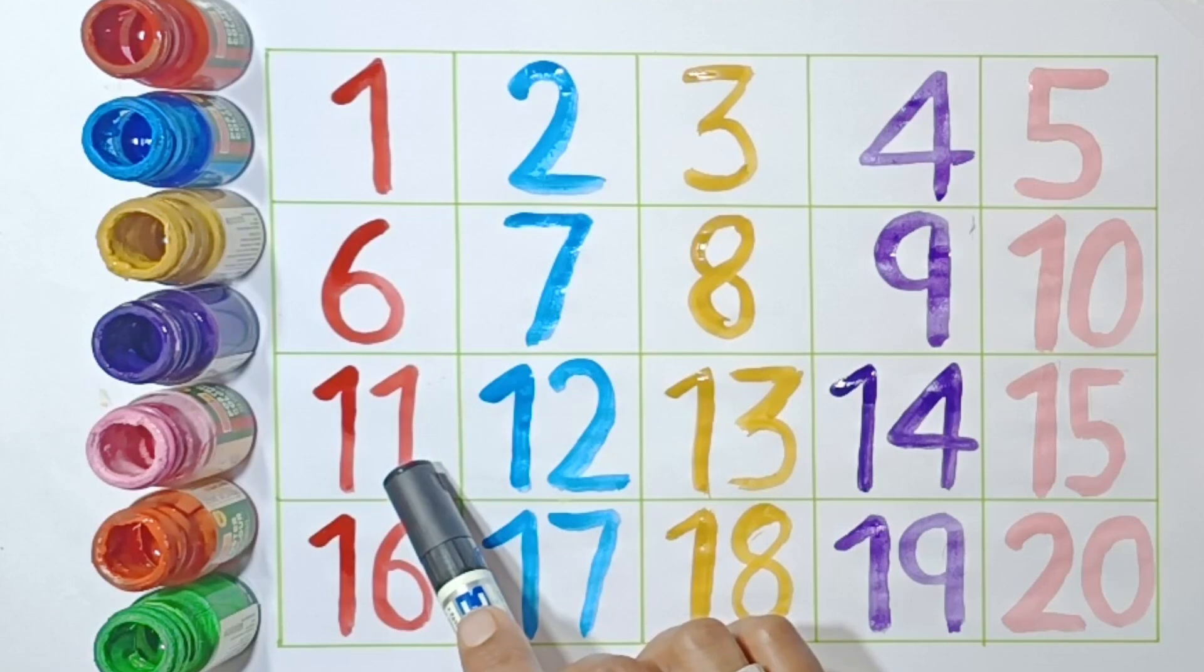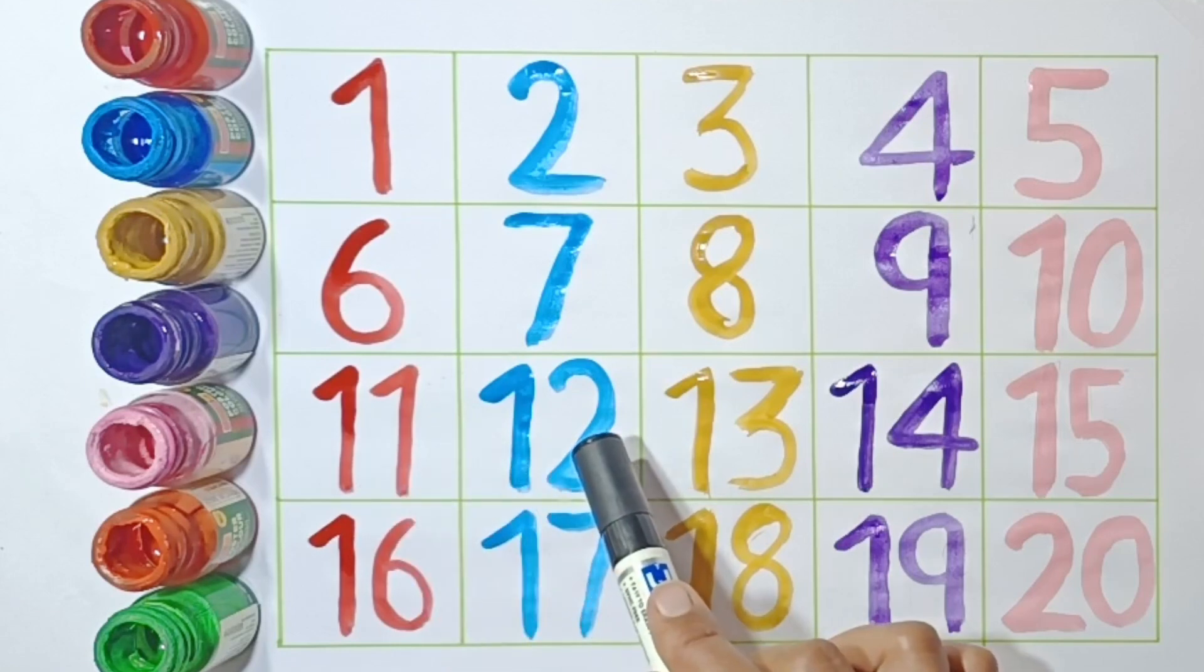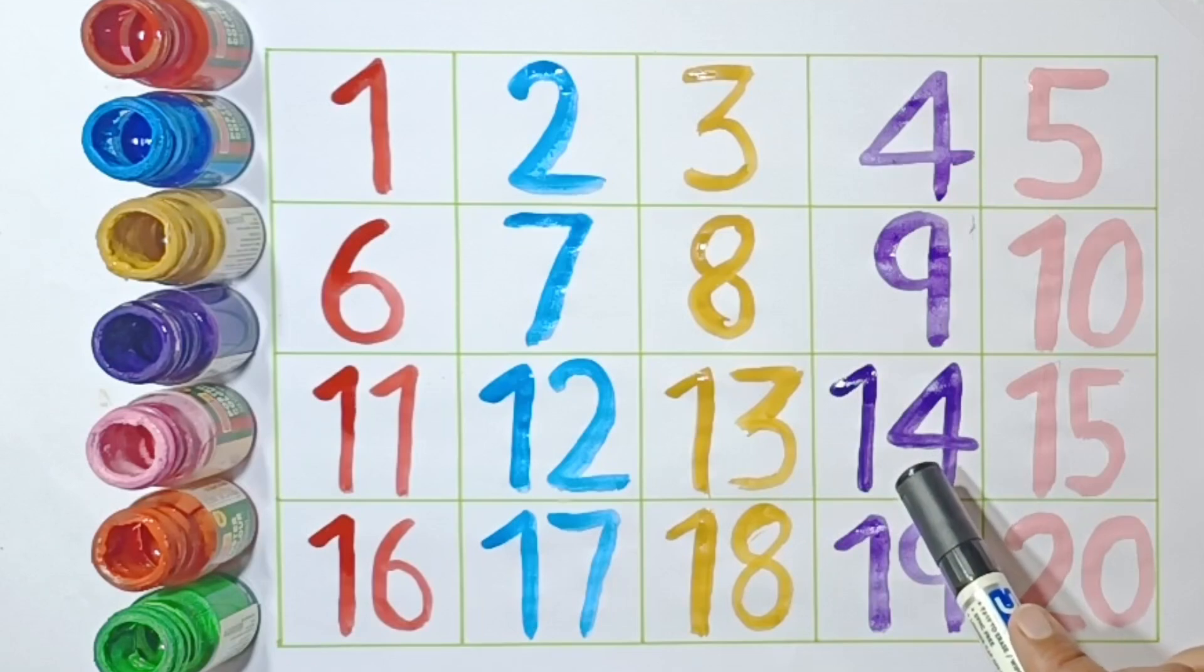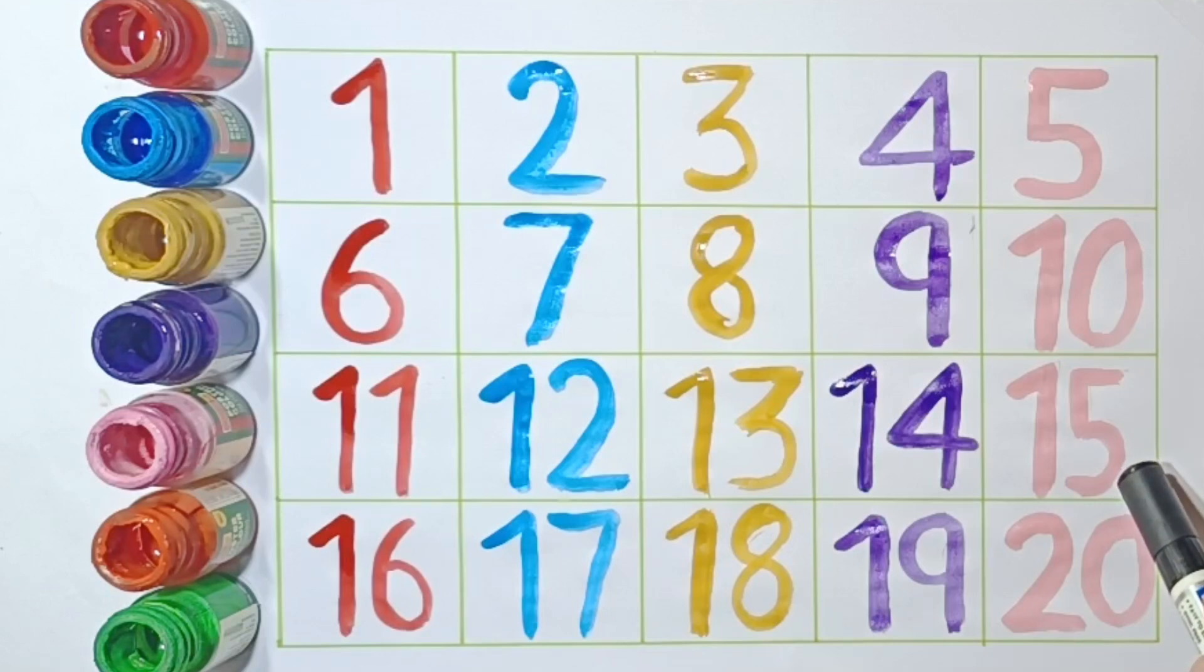11: E-L-E-V-E-N. 12: T-W-E-L-V-E. 13: T-H-I-R-T-E-E-N. 14: F-O-U-R-T-E-E-N. 15: F-I-F-T-E-E-N.